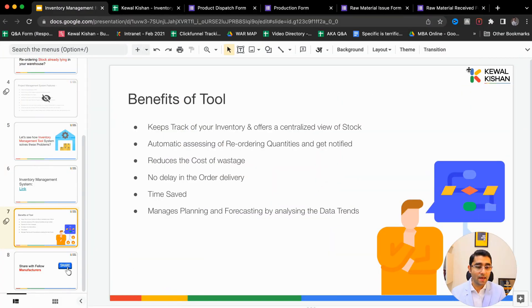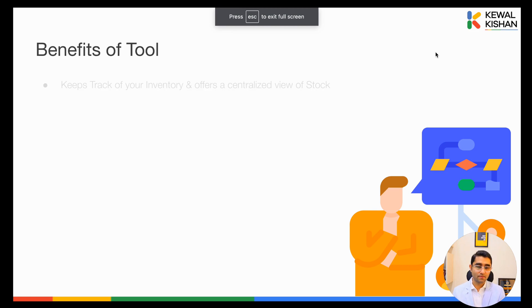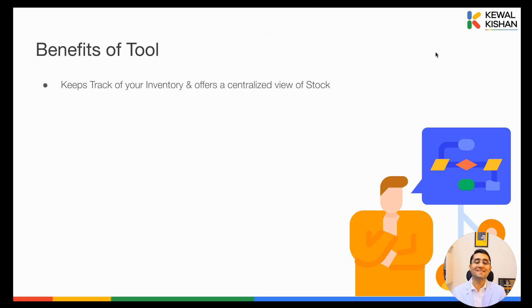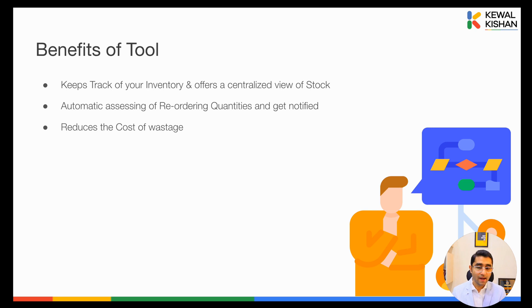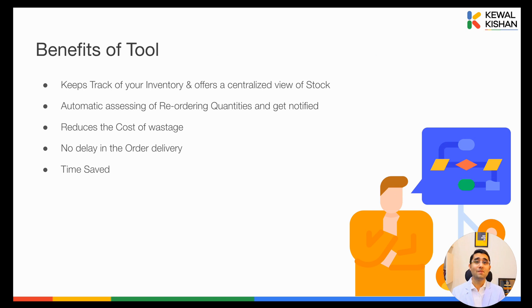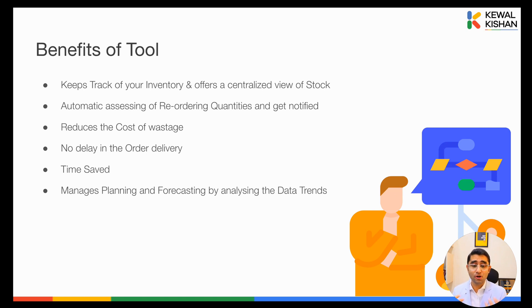This solves the biggest challenges of the industry. The benefits of this entire system: it keeps tracking of your inventory and offers a centralized view of raw material and finished goods. You get automatic assessment of reorder quantities and get notified. It reduces wastage costs. There's no delay in order delivery because you have all the material required. You save your most precious asset — time. It manages planning and forecasting by analyzing data trends, tells you which items will soon go below the reorder limit, and you can create reports on top of it.